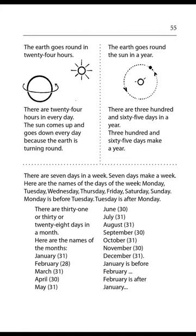Page 55. The earth goes round in 24 hours. There are 24 hours in every day. The sun comes up and goes down every day because the earth is turning round. The earth goes round the sun in a year. There are 365 days in a year. 365 days make a year. There are seven days in a week. Seven days make a week.